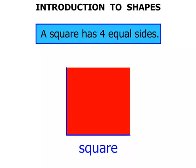One, two, three, four. So, four equal sides, and of course, those sides are straight.